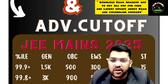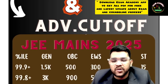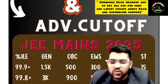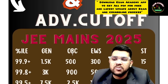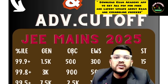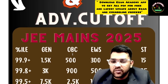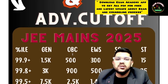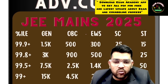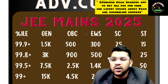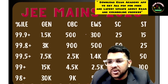For 99.9 percentile, rank will be around 1,500 for General (CRL). There are around 15 lakh candidates this year, so figures may vary by 10,000–20,000. OBC: 500, EWS: 300, SC: 25, ST: 15. For 99.8 percentile — General: 3,900, OBC: 515, EWS: 25 (for General, OBC, EWS, SC, ST respectively). For 99.5 percentile — General: 7,500, OBC: 2,500, EWS: 1,400, SC: 150.